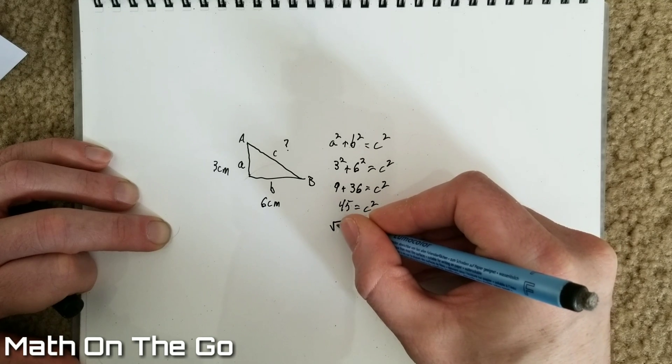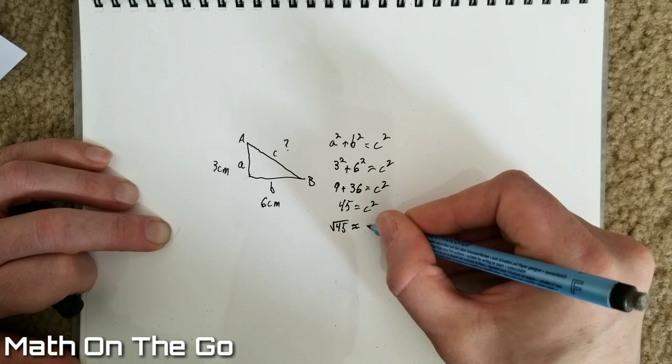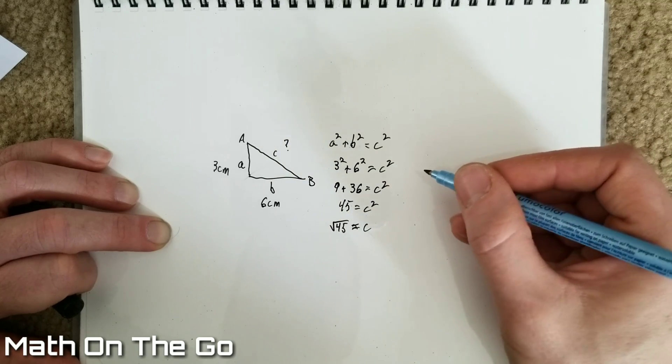Now we take the square root of both sides, and that gives us just C on the right side.